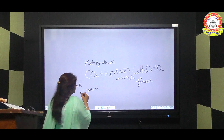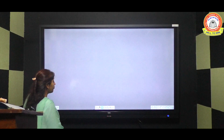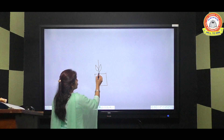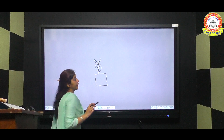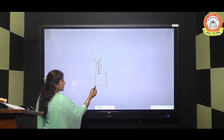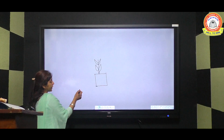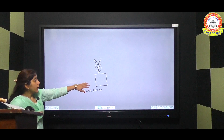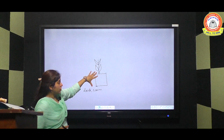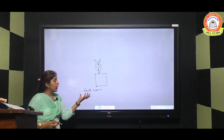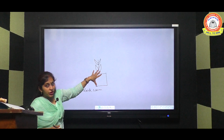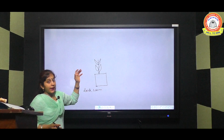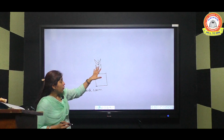To perform one activity, we will take a freshly potted plant with green leaves, meaning it is actively doing photosynthesis. We will keep this potted plant in a dark room for 2-3 days so that the starch already stored in the plant is consumed. Then we will keep it in sunlight for preparing new starch.